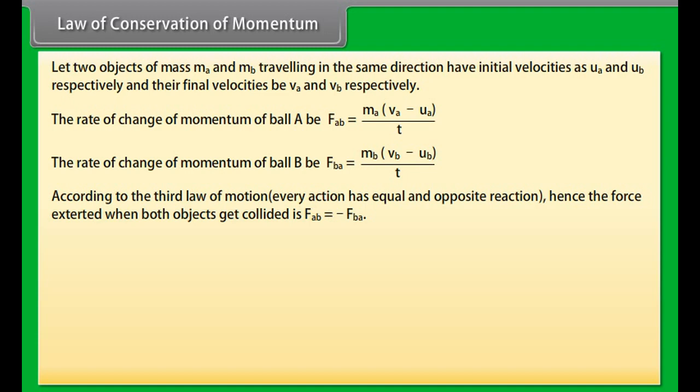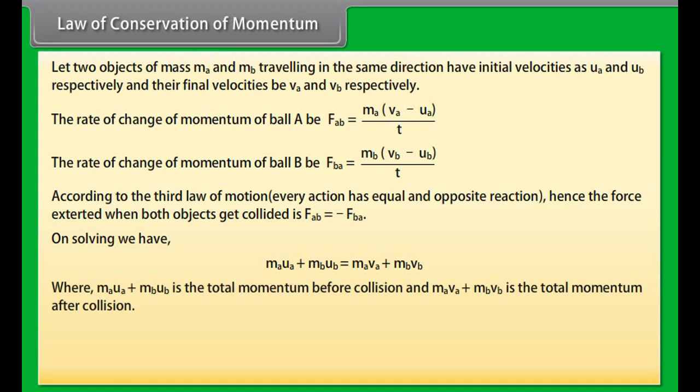Let two objects of mass MA and MB traveling in the same direction have initial velocities as UA and UB respectively and their final velocities VA and VB respectively. The rate of change of momentum of ball A, FAB which equals MA into VA minus UA upon T.